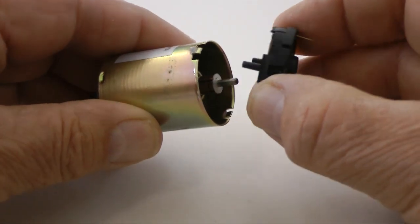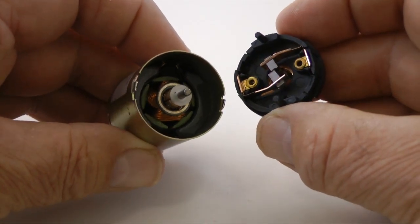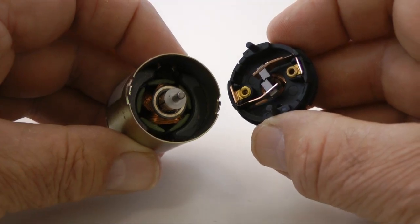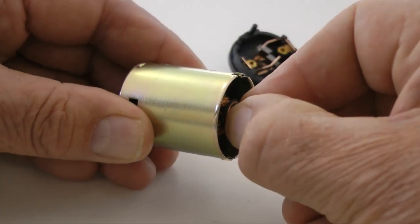Pulling the end off of the motor reveals brushes and an armature. The armature is the structure that holds the coils.